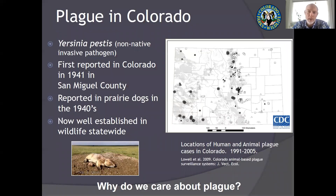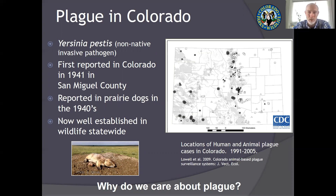Focusing down into just Colorado: Yersinia pestis is a non-native pathogen — it didn't evolve here, it's not supposed to be here, and our wildlife aren't prepared to deal with it. It was first reported in San Miguel County in the southwest part of the state in 1941. Throughout the 1940s it appeared statewide in all of the prairie dog species we have. It's currently very well established, present in all four corners of the state and doesn't appear to be going away.